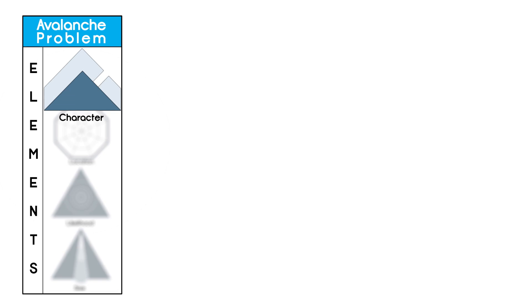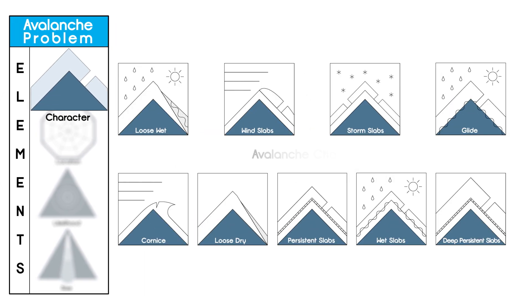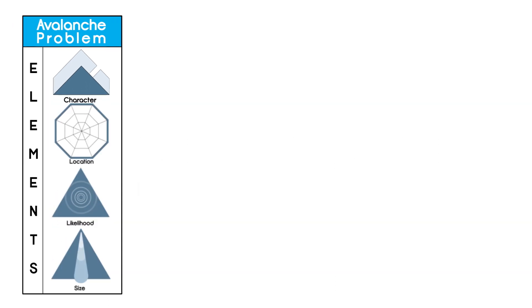Avalanche character is simply a kind of avalanche with unique characteristics that influence terrain and travel choices. In the US, we use nine distinct characters.